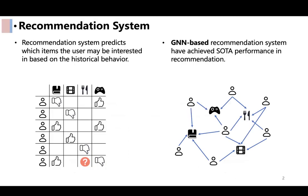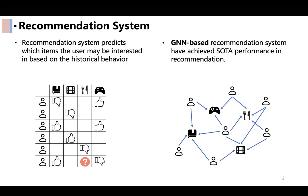Recommendation systems predict which items a user will be interested in based on historical interactions. Graph-based recommender systems, utilizing GNN to model interactions, have attracted widespread attention due to their impressive performance.